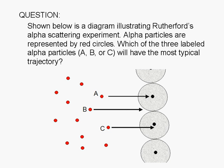In Rutherford's experiment, alpha particles are fired at a very thin piece of gold foil. Most of the alpha particles went through the foil with very minor deflection, just like choice B. The correct answer is choice B.